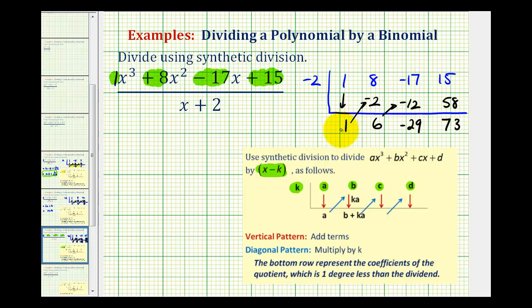These terms represent the coefficients of our quotient, where the last term, 73, is our remainder.